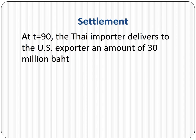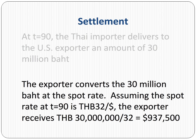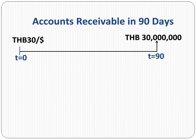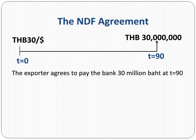At t equals 90, the Thai customer delivers to the US exporter an amount of 30 million baht. The exporter converts the amount at the spot rate. Assuming the spot rate at t equals 90 is 32 baht per dollar, the exporter receives 937 thousand five hundred dollars. Since the bank promised to pay the exporter 1 million dollars and the baht depreciated, the bank must pay the exporter a settlement amount of 62 thousand five hundred dollars.